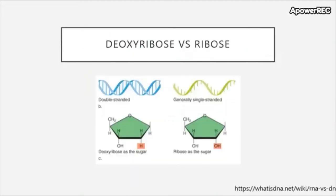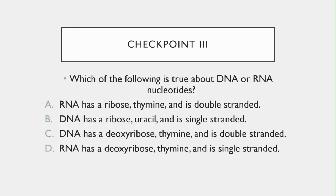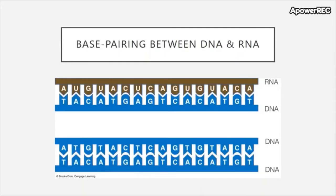Looking at the sugars: deoxyribose versus ribose — on the 2-prime carbon, instead of a hydrogen group there is a hydroxyl group (OH). So ribose is not missing an oxygen. Checkpoint three: which of the following is true about DNA or RNA nucleotides? Even though RNA has a different structure, it is still capable of base pairing. The fundamental difference is that instead of A binding to T, in RNA, A will bind to U — but you still use the same process of writing a copy from a template strand.